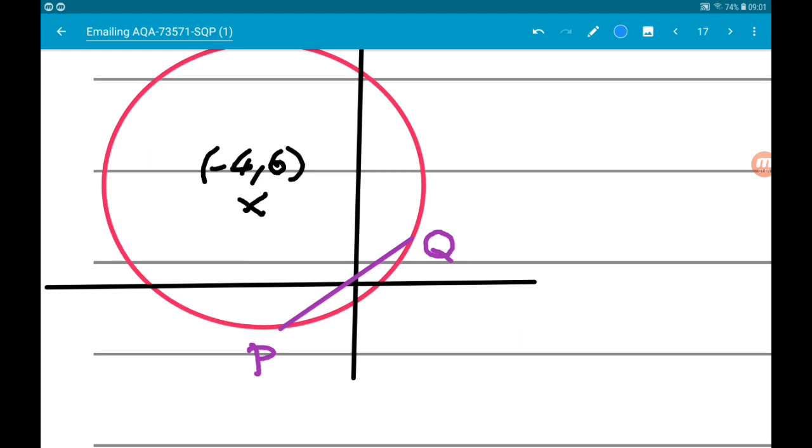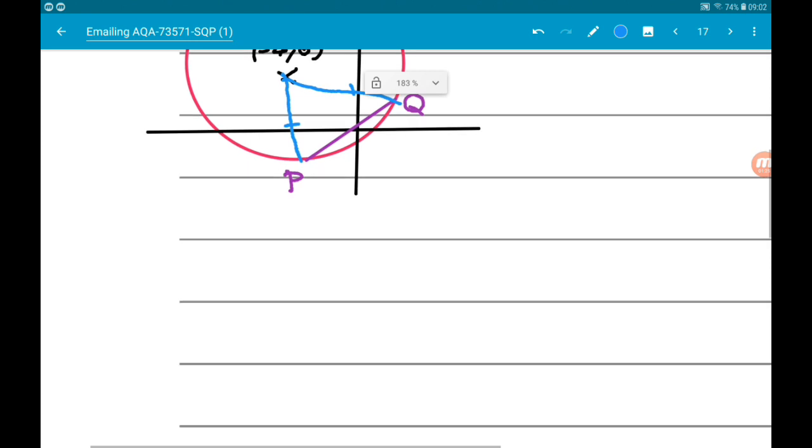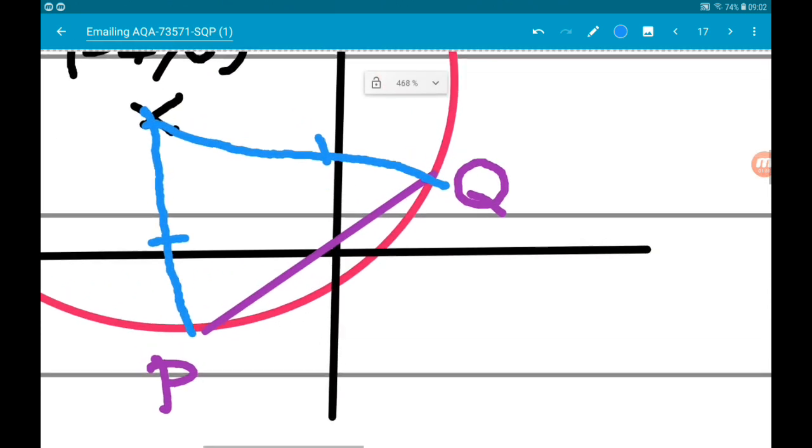We also know that C to P is going to be equal to CQ because they are both a radius of the circle. So CP is equal to CQ which is equal to 8. Again that is because CP and CQ are the radii of the circle.